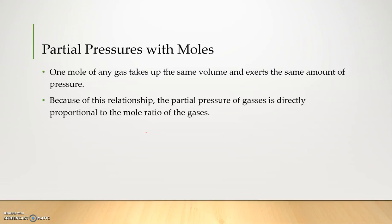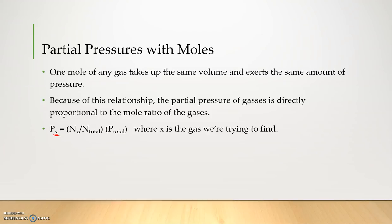We can turn this into an equation. We have P of X, where X is our unknown gas — or whichever gas we're solving for. The pressure of a certain gas equals N (remember, N is our variable for moles) — the moles of that gas divided by the total number of moles in the system — multiplied by the total pressure of the system. Again, X is the specific gas that we're working with.